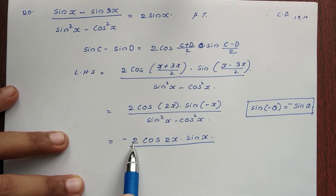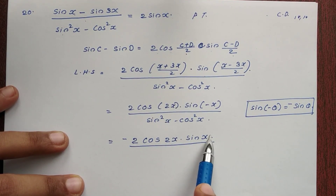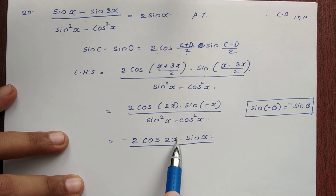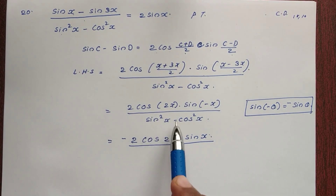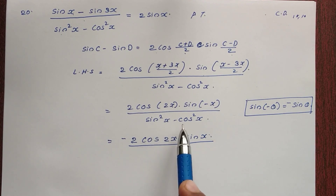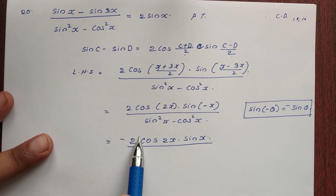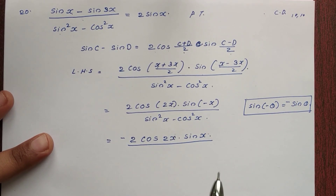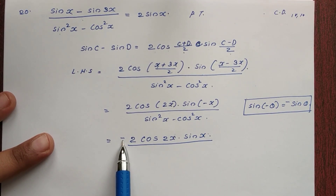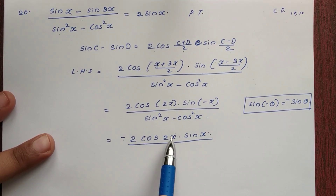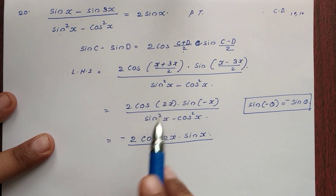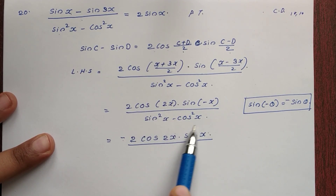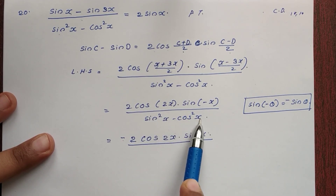Now we can see we have 2 sin x in the answer. The extra factor is cos 2x, and cos 2x is in the denominator as sin squared x minus cos squared x. Now, cos 2x equals cos squared x minus sin squared x, so sin squared x minus cos squared x equals minus cos 2x.